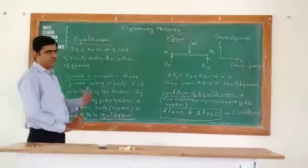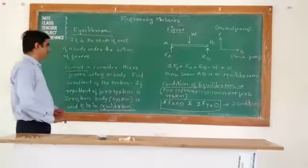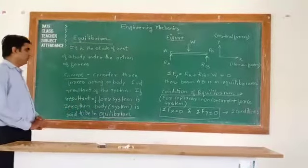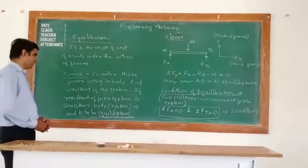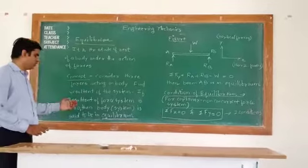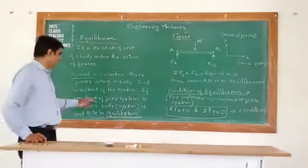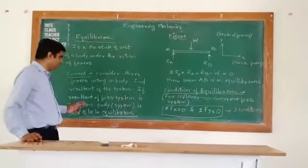We will see what it exactly means by considering an example. Consider three forces acting on a body. We will find the resultant of the system. If the resultant of this force system comes to be zero, we can say this body or system is in equilibrium.